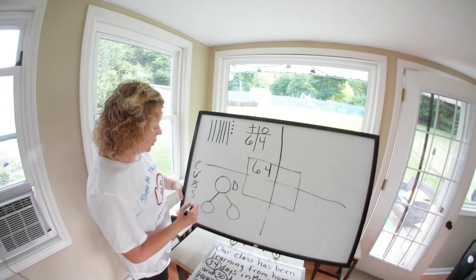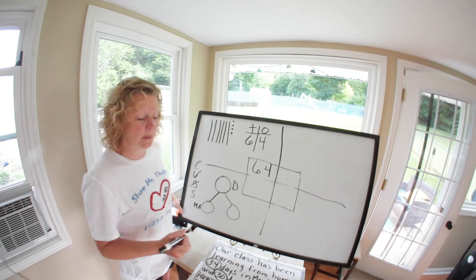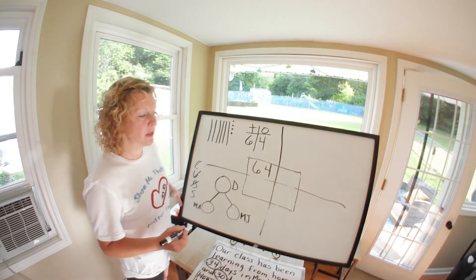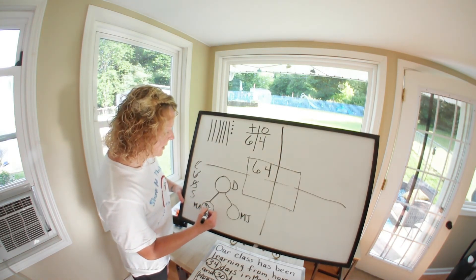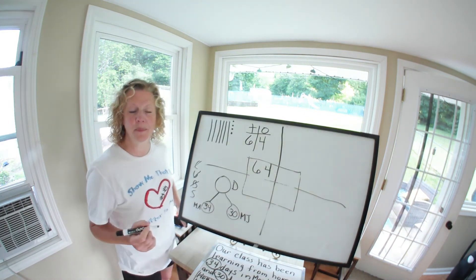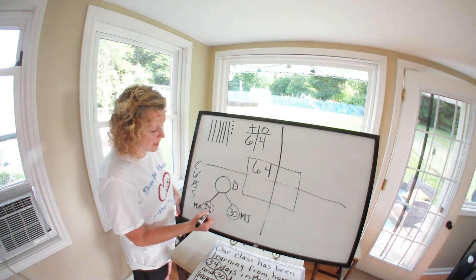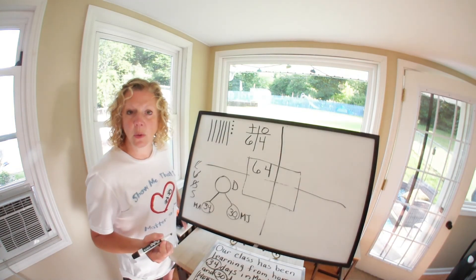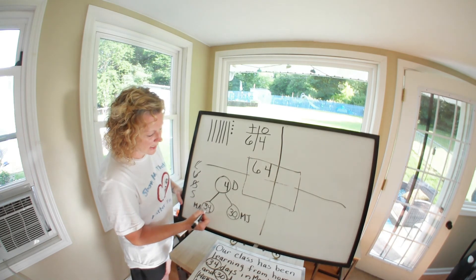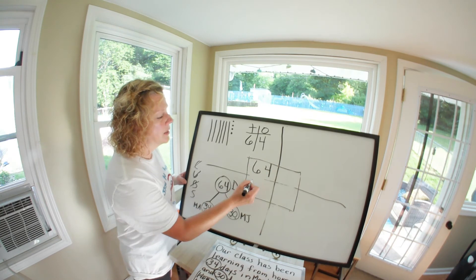Now we fill in our number bond. We'll have 'MA' for March and April and 'MJ' for May and June — 34 days here and 30 days here. Looking at our ones: I have a four here and a zero here, so we only added tens, meaning four stays the same. Then we add our doubles fact: three plus three is six. So 64 is our answer again.